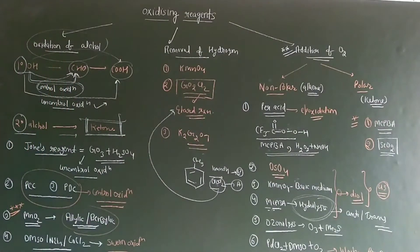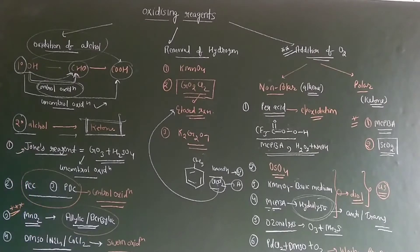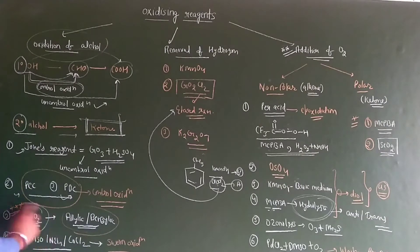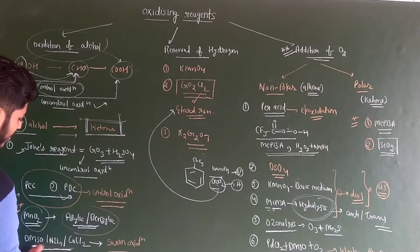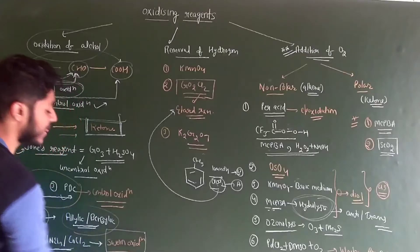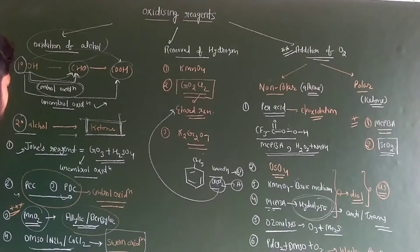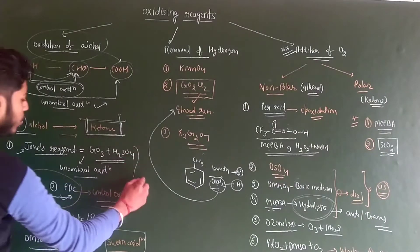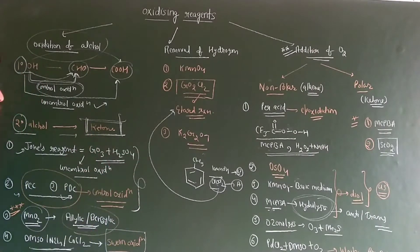So the first category we have is oxidation of alcohol. For this we get four reagents: one is Jones reagent, one is pyridinium chlorochromate (PCC), one is pyridinium dichromate (PDC), one is manganese oxide, and the fourth is DMSO in presence of NEt3 and COCl2, which we call Swern oxidation. In this video we are going to discuss Jones reagent, pyridinium chlorochromate, and pyridinium dichromate.